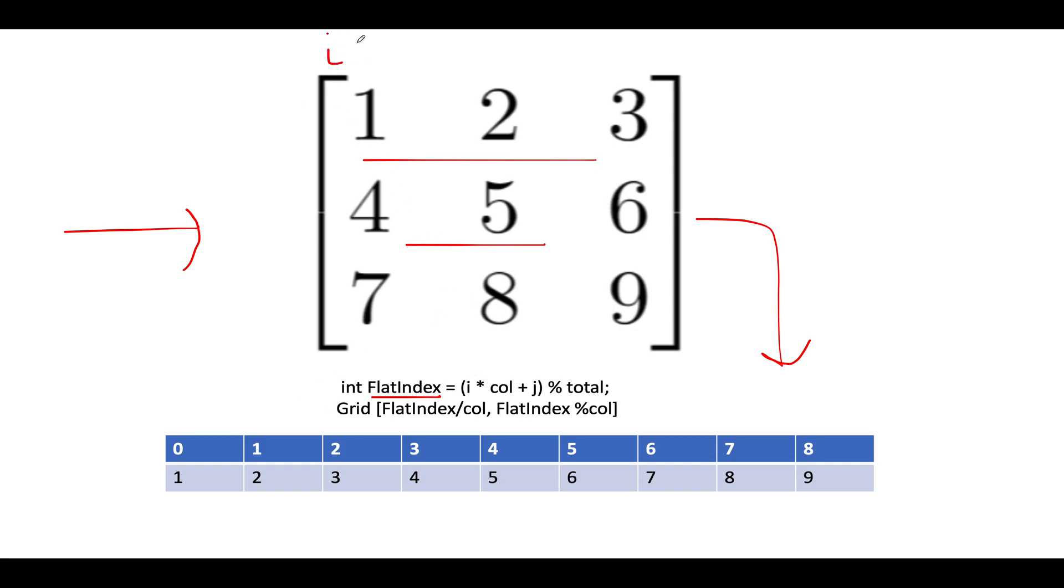You pick up an index i, j and you generate the flat index which would be given by i into column plus j modulus the total number of elements that we have. So this is the conversion formula of an i, j element in a 2D matrix to a 1D matrix.